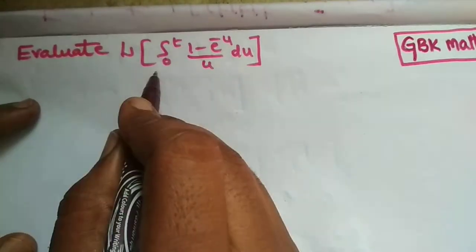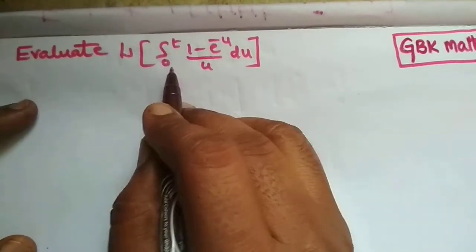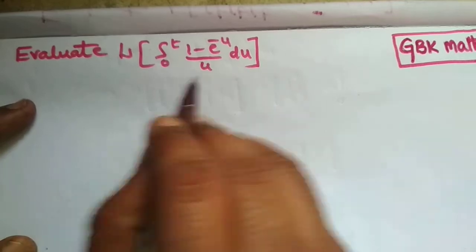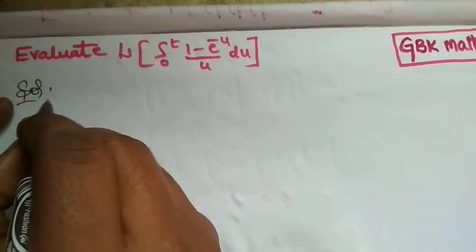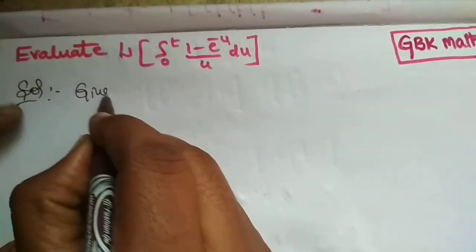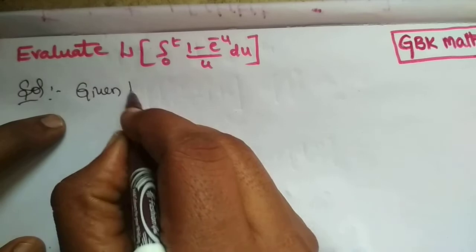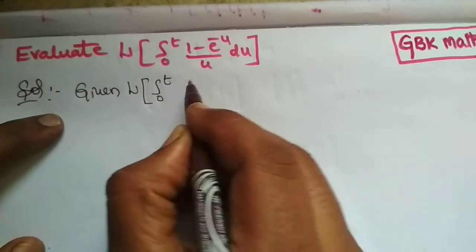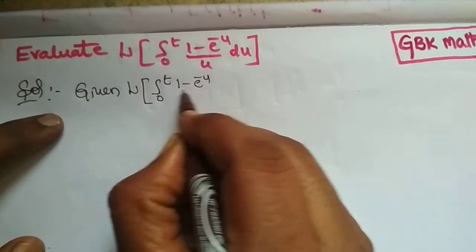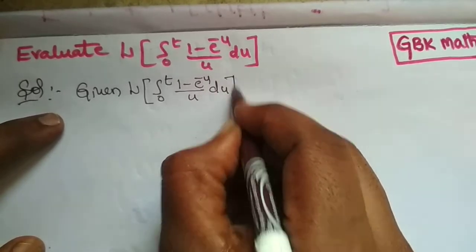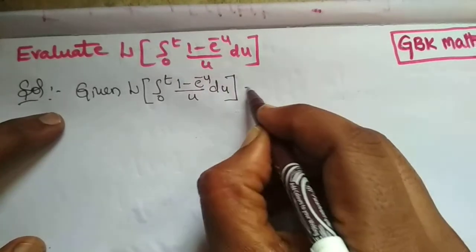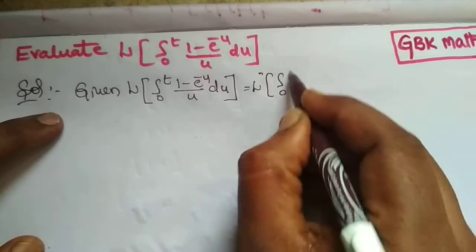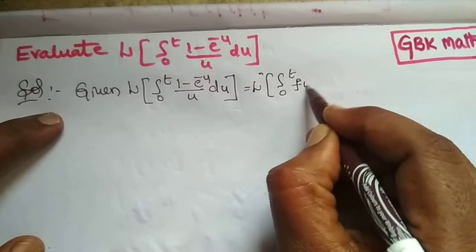The question is: evaluate the Laplace transformation of the integral from 0 to t of (1 - e^(-u))/u du. The solution: given the Laplace transformation of the integral from 0 to t of (1 - e^(-u))/u du, this is in the form of the Laplace transformation of the integral from 0 to t of f(u) du.